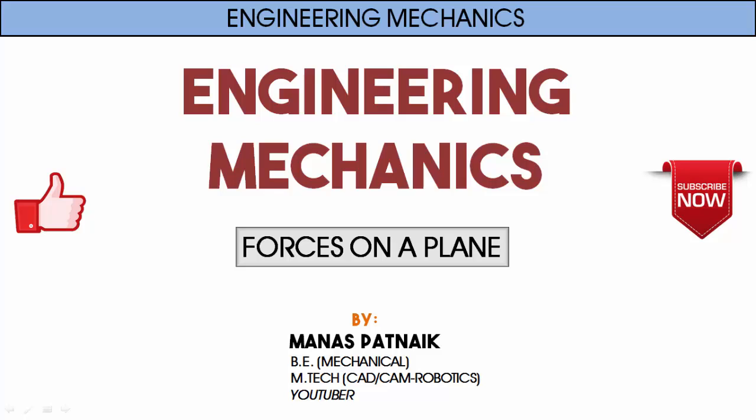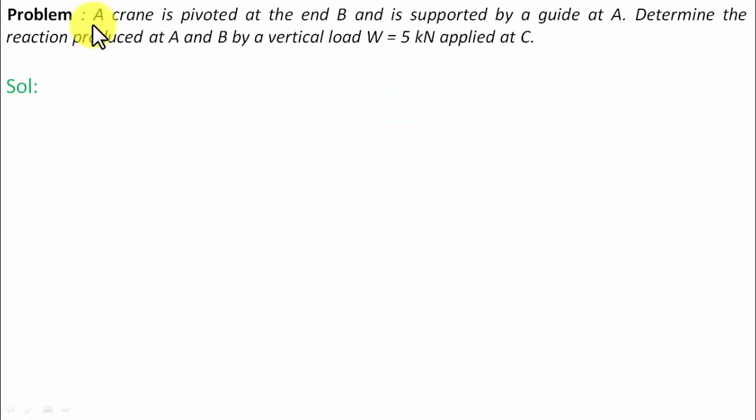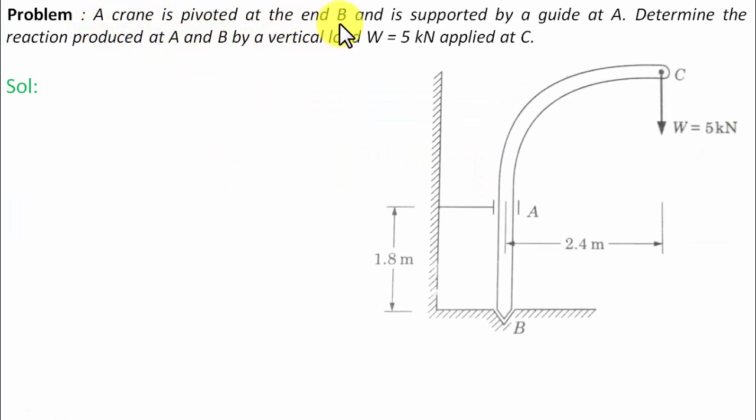Hi there guys, hope you're doing well. This is your friend and tutor Manas. Let's see what this problem has in store. A crane is pivoted at the end B and is supported by a guide at A. Determine the reaction produced at A and B by a vertical load W equals 5 kN applied at C.